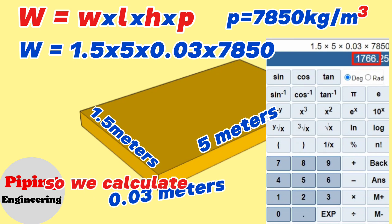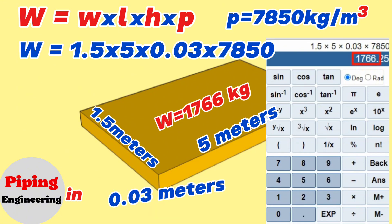So we calculated and found that the weight of the iron sheet in our example will be equals 1766 kg.